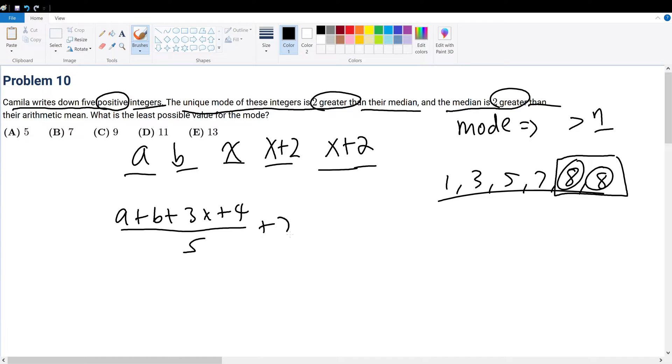And that plus 2 must give the arithmetic mean, or rather the median, which is x. With this, let's simplify. a plus b plus 3x plus 4 must give 5x minus 10. Therefore, a plus b minus 2x plus 14 must give 0.